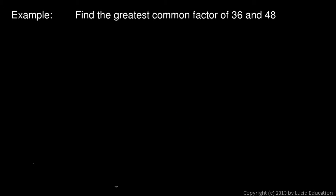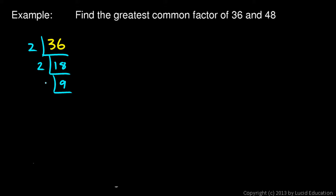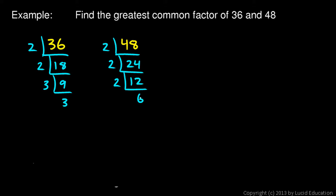Here's another example. Find the greatest common factor of 36 and 48. We'll start with 36 and find the prime factorization. You could use a factor tree, but I'm using continued division since it's compact on the page — however you want to do it is fine. 36 is 2 times 18, and 18 is 2 times 9, and 9 is 3 times 3. Then do the same with 48: 48 is 2 times 24, 24 is 2 times 12, 12 is 2 times 6, and 6 is 2 times 3.